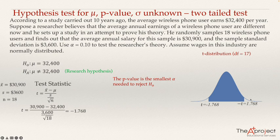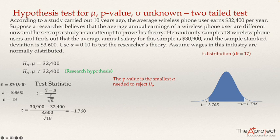If the t-value were positive, we would still need to account for the other side, because the alternative hypothesis has a "not equal" sign, making this a two-tail test. So we always multiply the single-tail area by 2.